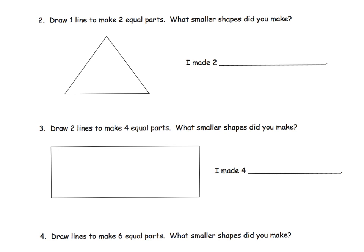So here we are on that next slide, and the directions, we're removing our scaffolds a little bit because now the students have to draw in the line in order to create the equal parts. It says draw one line to make two equal parts. So we have to look at this triangle and figure out, well, how can we draw one line to make two equal parts? I think the most common answer is going to be this. And of course, I made two triangles.